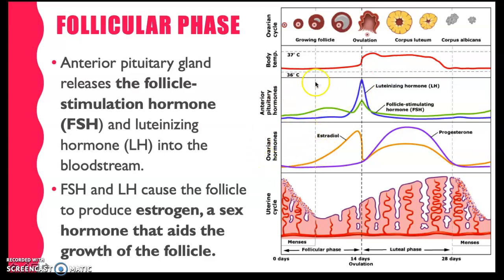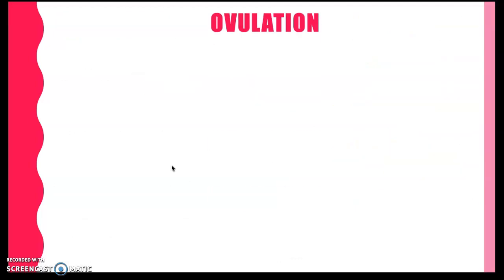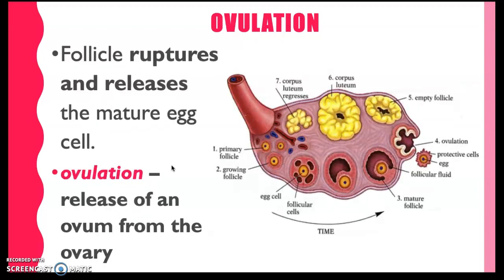For the ovarian hormones, there is a positive feedback mechanism between the anterior pituitary and the ovary. The level of estrogen is increasing before the 14th day, before the actual ovulation, as compared to progesterone. Progesterone will increase its level later on in the second phase of the ovarian cycle. The transition between the follicular phase and the next phase is called ovulation, wherein the follicle ruptures and releases the mature egg cell. This egg cell is released from the ovary and will travel to the fallopian tube, where it will wait for sperm cells to fertilize it.